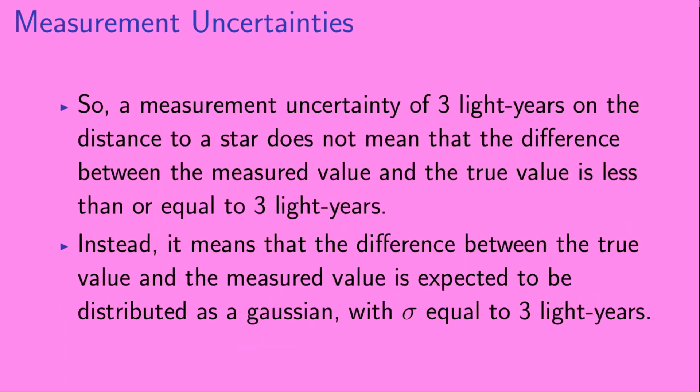So, a measurement uncertainty of three light years on the distance to a star does not mean that the difference between the measured value and the true value is less than or equal to three light years. Instead, it means that the difference between the true value and the measured value is expected to be distributed as a Gaussian with sigma equal to three light years.